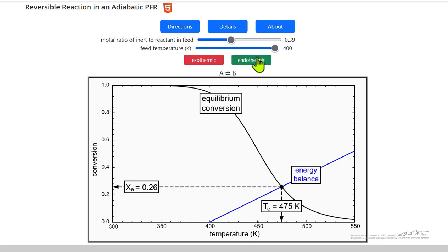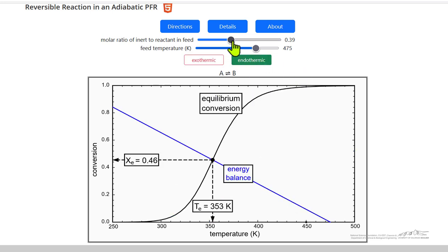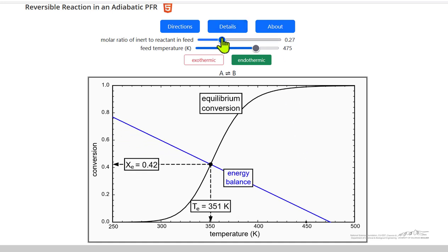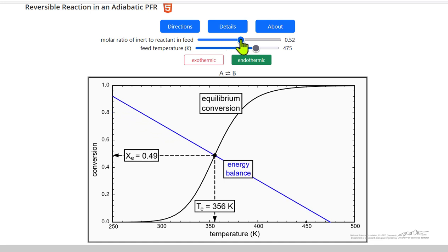For an endothermic reaction, behavior is going to be reversed. The slope of this line now is negative because as reaction takes place, we cool everything down in an adiabatic reactor. If I add inert, then we have to cool down more material so the temperature is higher.